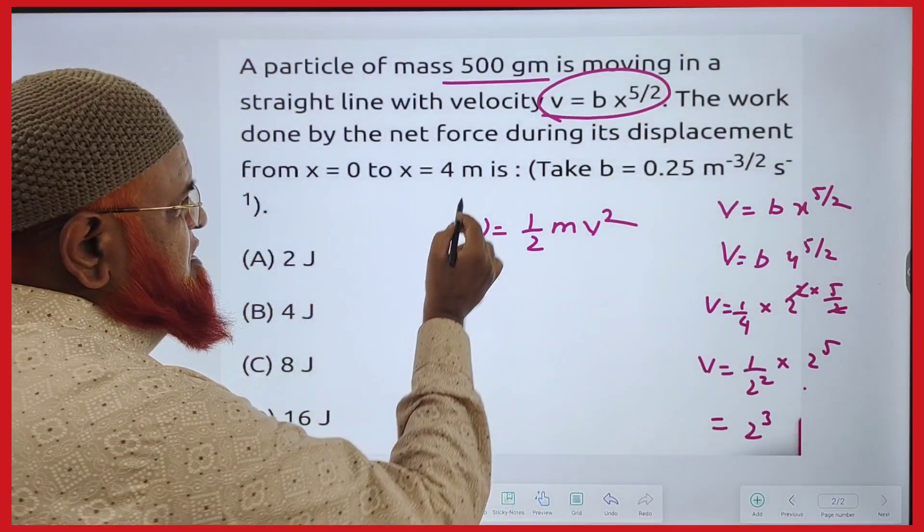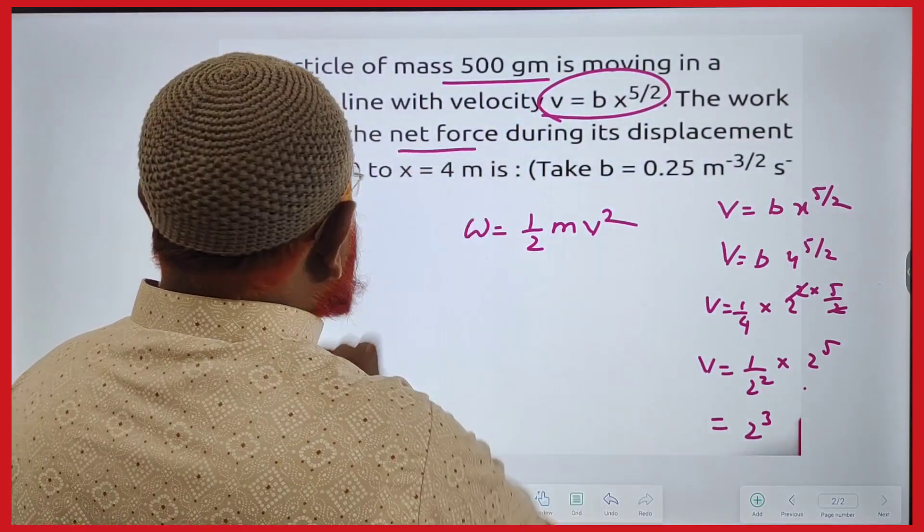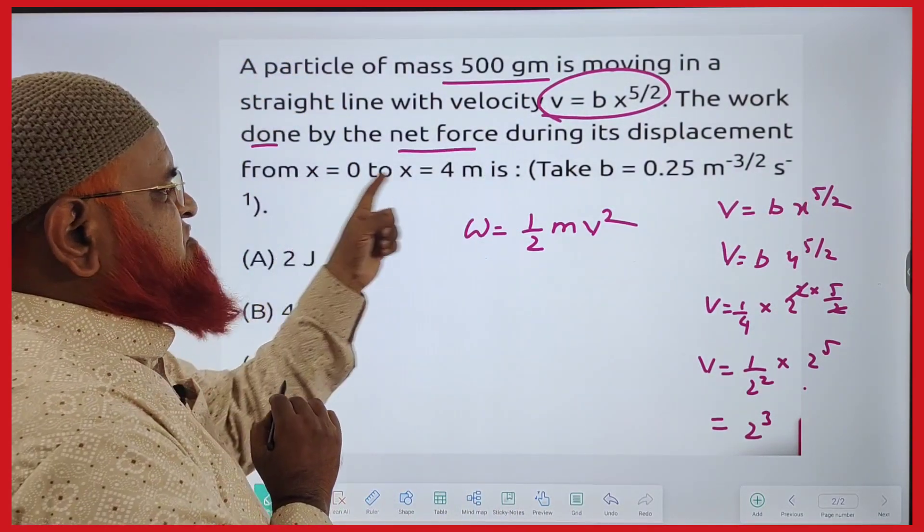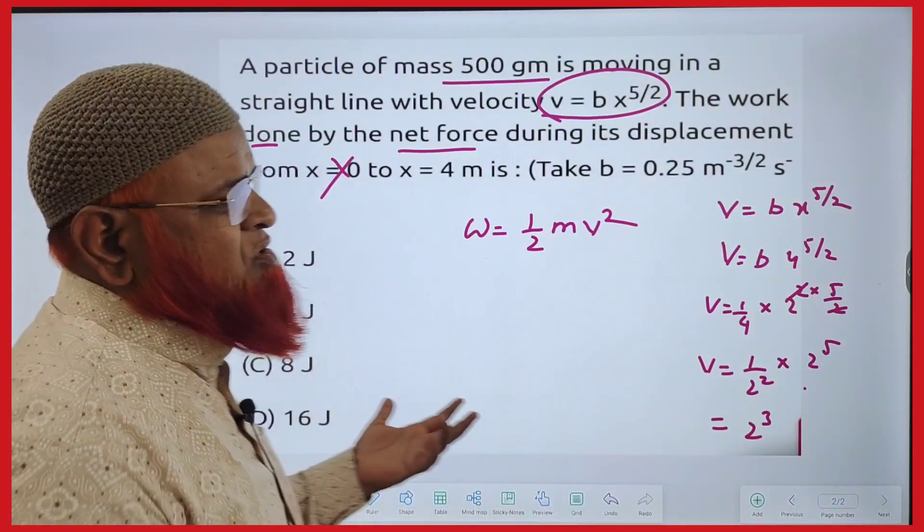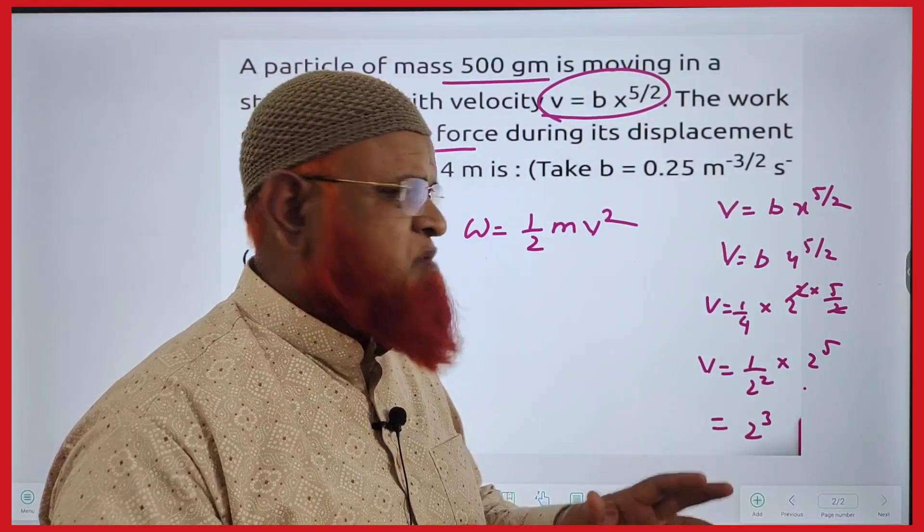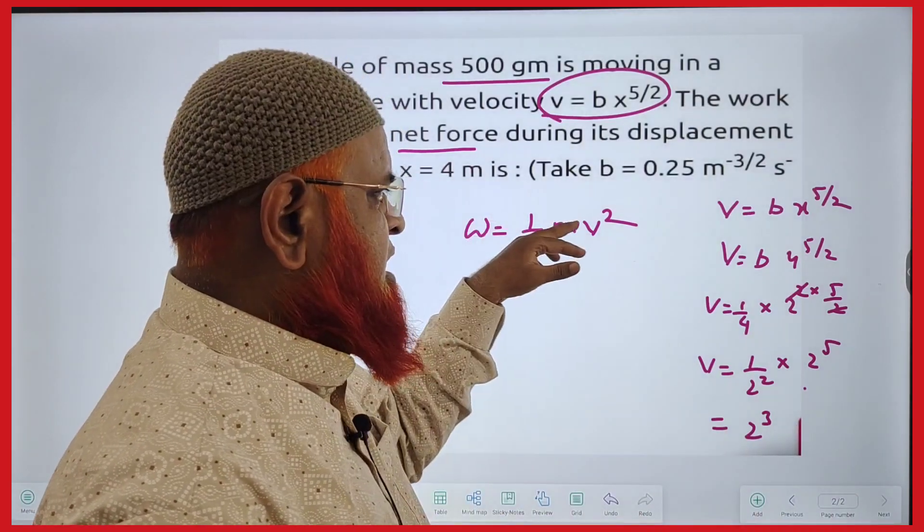So he is asking us to find out the work done. Work done, he is asking. And the limits are from X equals 0 to 4. Now, as 0 is considered, there is no more chance of taking 0 because there is no displacement. And you have to take it as 4 here. X is 4 here.